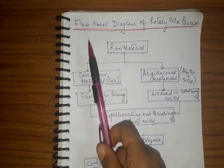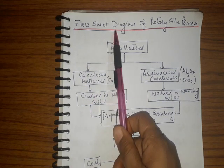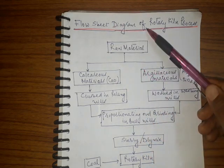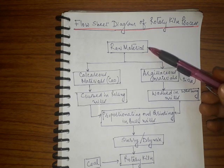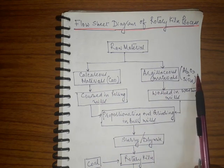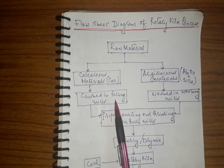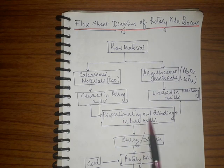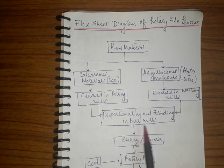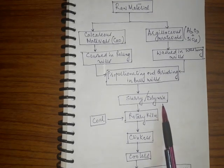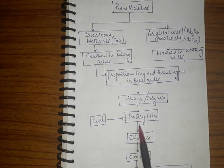The manufacturing of Portland cement through the rotary kiln process can be understood through a flow sheet diagram. The raw materials — calcareous material (lime) and argillaceous material (alumina and silica) — are crushed separately or mixed with water, then mixed together in the right proportions and ground in ball mills or tube mills to get either a dry mix or a slurry in the wet process. This mix is then sent into the rotary kiln.